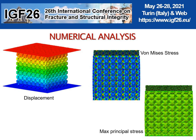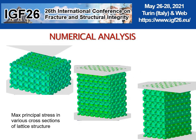Here, an example of results is shown in terms of displacements, von Mises stresses, and maximal principal stresses. Further, finite element results in terms of maximal principal stresses are also presented in various cross-sections at the middle of the lattice structure.